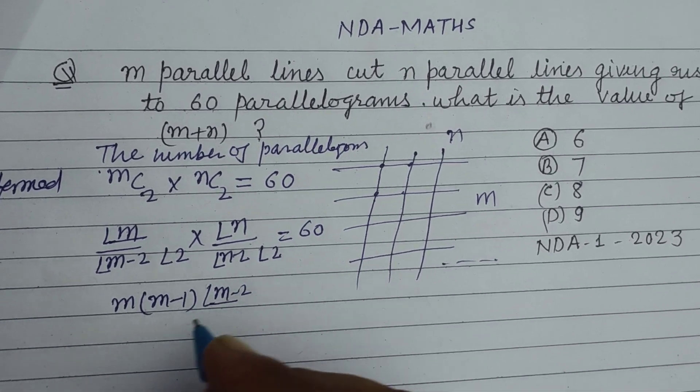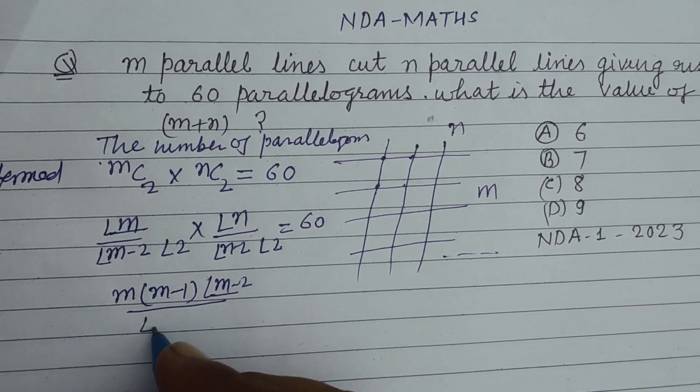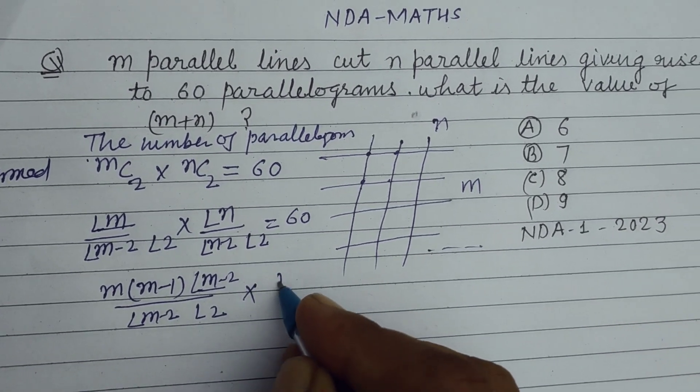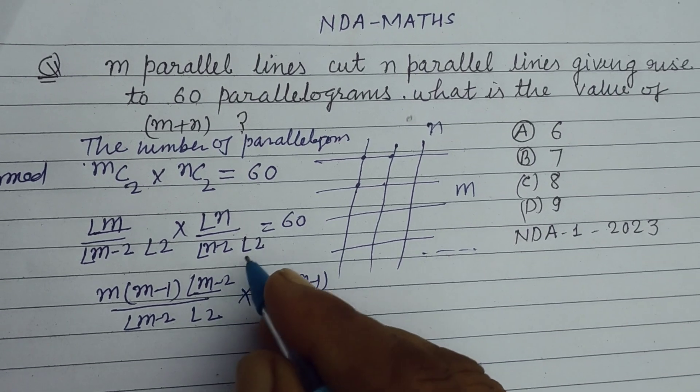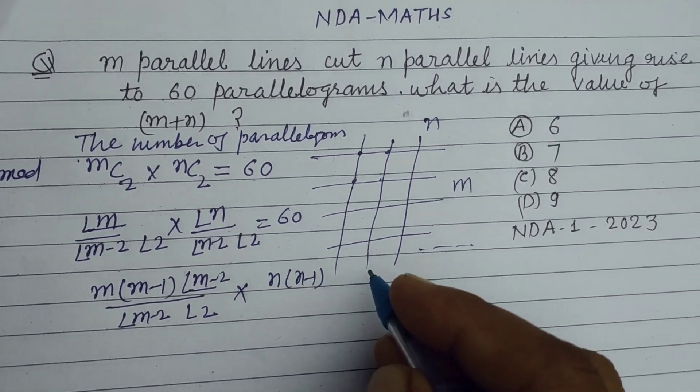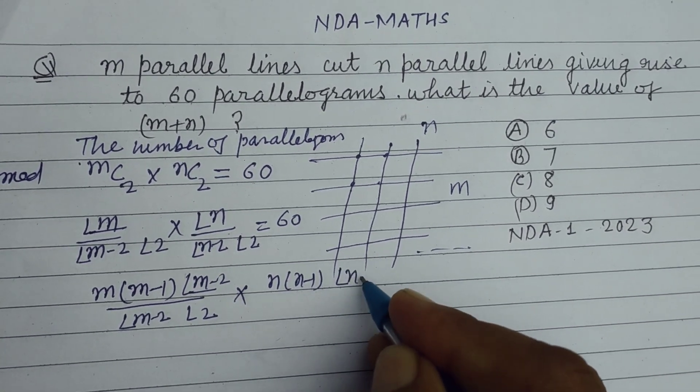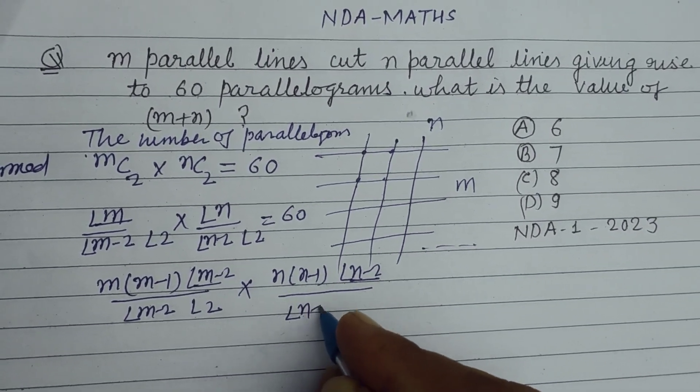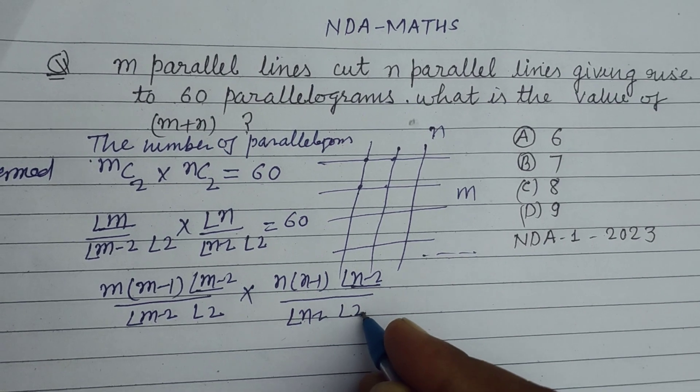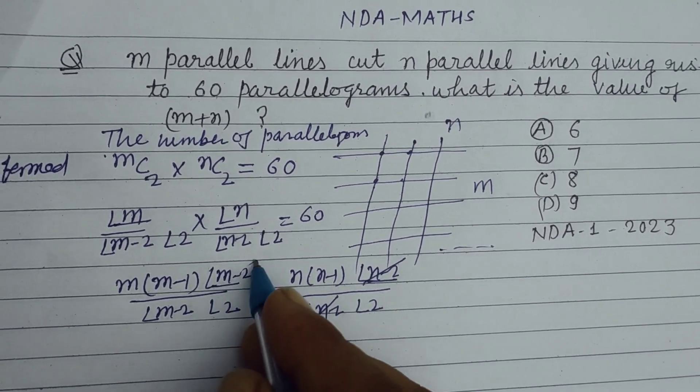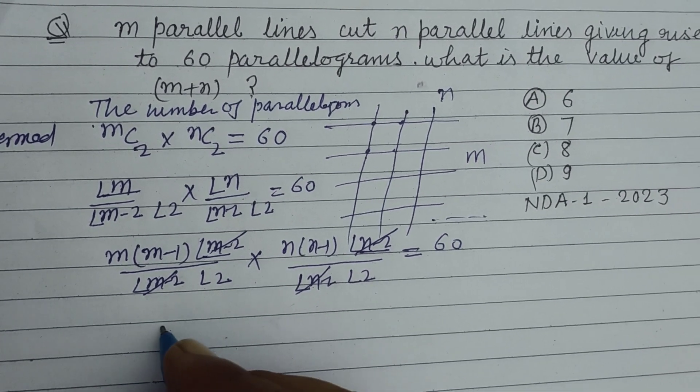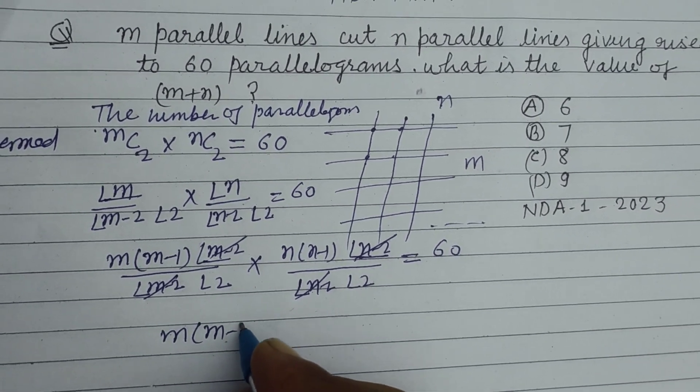Times n into n minus 1 over 2 factorial. So this cancels out, we get m into m minus 1 times n into n minus 1 over 4 equals 60.